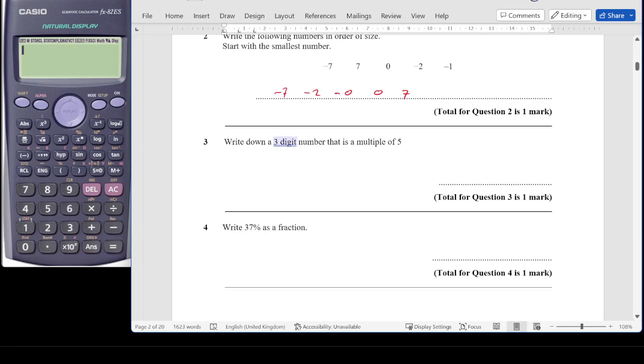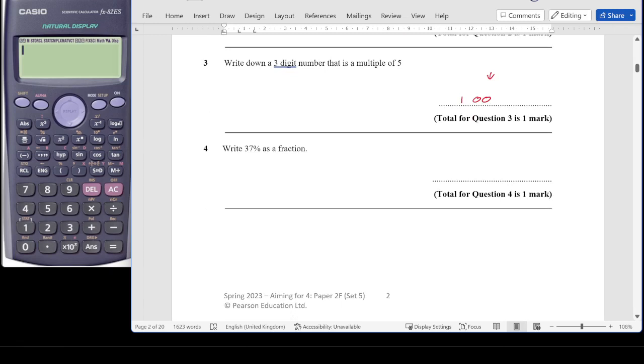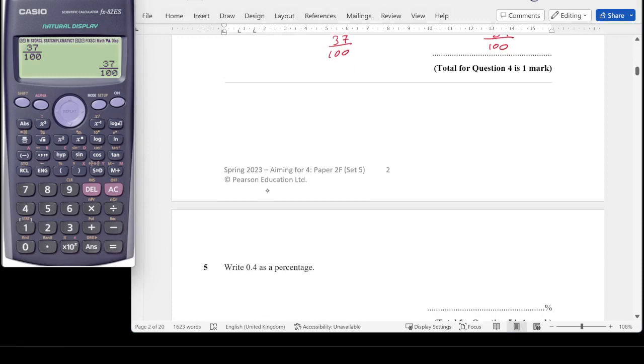Question 3, write down a three-digit number that is a multiple of 5. I'm going to write down the first one that I can come up with, which would be 100, although it will be any three-digit number ending with a 0 or a 5. Question 4, write 37% as a fraction. That's going to be 37 out of 100. All percentages are out of 100. I could simplify that down if I could spot a number that goes into both 37 and 100, but I can't spot one.